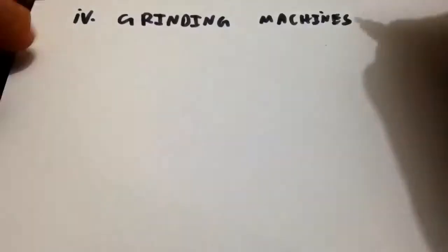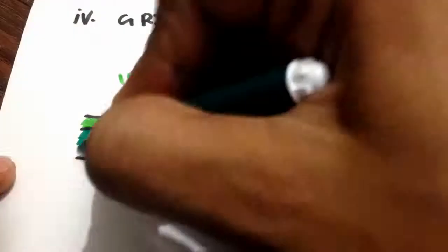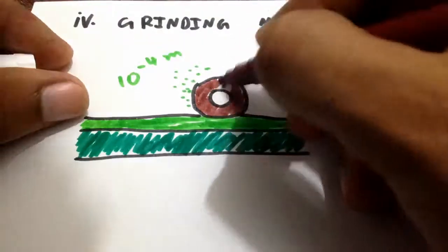Fourth, Grinding Machine. Grinding is the process of removing the material by the abrasive action of a revolving wheel on the surface of a workpiece. The removal takes place in the form of small chips.